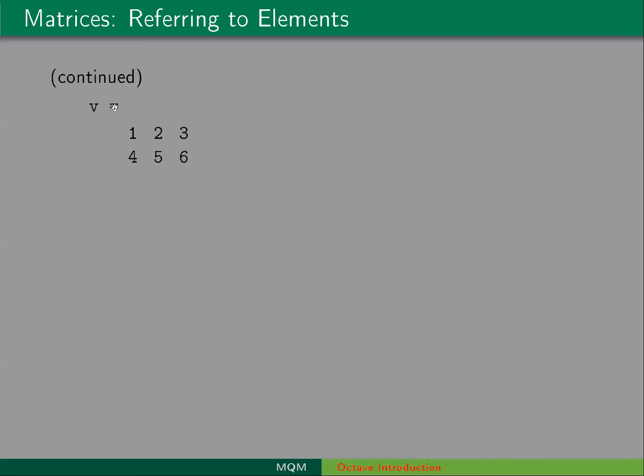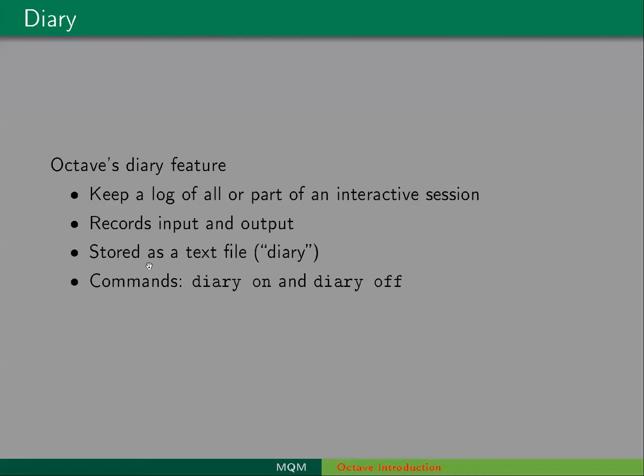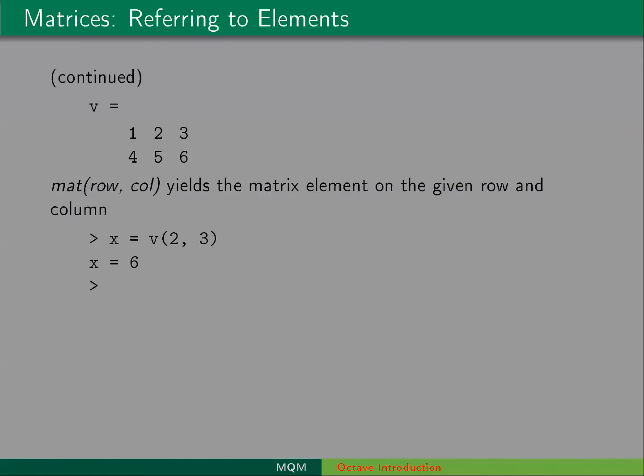And again, we had this vector V that we created, or matrix V that we created. And if we want to access one element of it, we use parentheses and then the index row column. So for example, the 2, 3 element of V is going to be the second row of the third column, so that would be 6. So we've assigned the value of the 2, 3 element of V to the variable X.